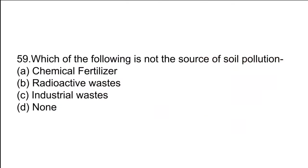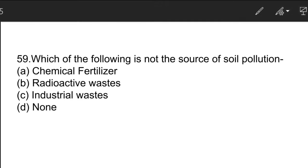The next question: which of the following is not a source of soil pollution? The correct answer is D — all of the options are sources of soil pollution, including chemical fertilizer, radioactive waste, industrial waste, pesticides, and discarded materials.